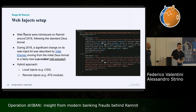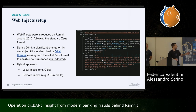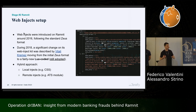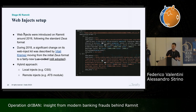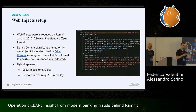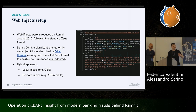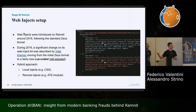They also use a hybrid approach regarding the web inject payload. There are 'local injects': if you get the Ramnit binary and dump the configuration module, you can see some of the web inject payload. However, you cannot see the full web inject payload, because the most interesting parts for our analysis — such as the ATS core module or money mule details — are stored on a completely separate command-and-control infrastructure and retrieved in real time when needed.